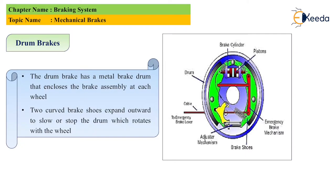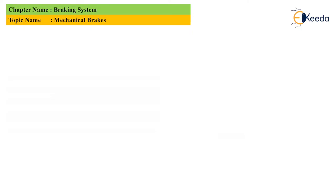Now we see here the brake shoe diagram. Drum brake has a metal brake drum that encloses the brake assembly at each wheel. Two curved brake shoes expand outward and slow down or stop the motion of the wheel, and in that sense the brakes are applied to the wheel.